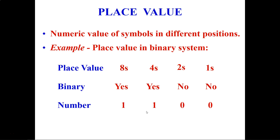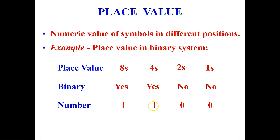Next we have place value. We're going to see the place value in the binary system. The place values for binary start from 1s, 2s, 4s, and 8s. Binary representation uses yes for 1 and no for 0. So wherever you have yes, you have 1, and wherever you have no, the number will be 0.